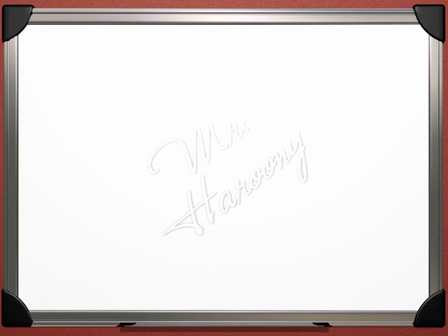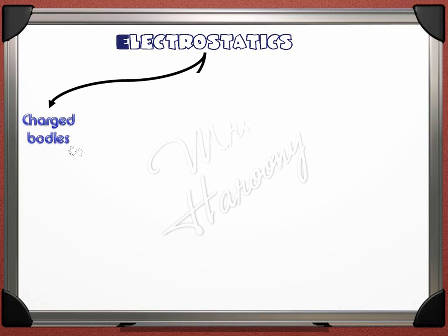In this lecture, we will talk about electrostatics. We will discuss the main points only that are related to this level: charged bodies, and we will divide the materials according to their electric properties into conductors and insulators, and we will talk about the electric properties of Earth.